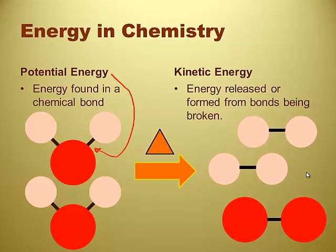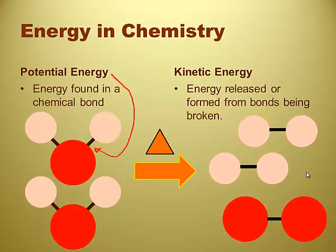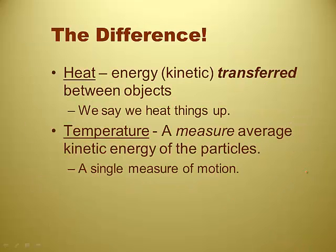That little bit of extra energy turns into temperature. So there's a form of potential energy and kinetic energy in chemistry. Potential energy is the energy of the bonds; kinetic energy is the energy of the motion, the vibration of the molecules. Temperature is a measure of kinetic energy, and heat is the transfer. Heat is kind of like a conduit from warm to cool.